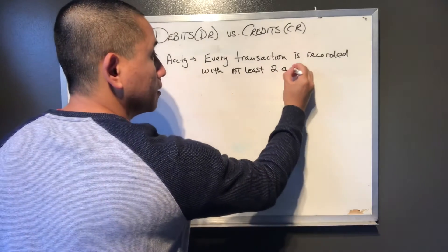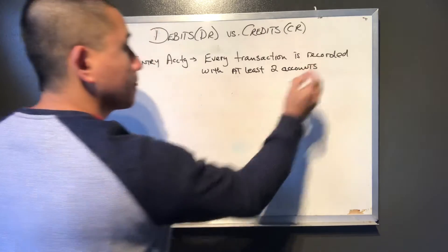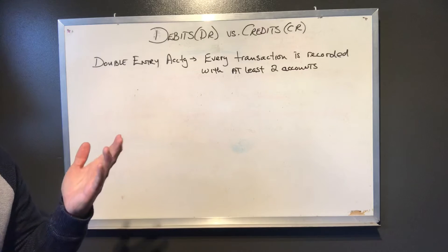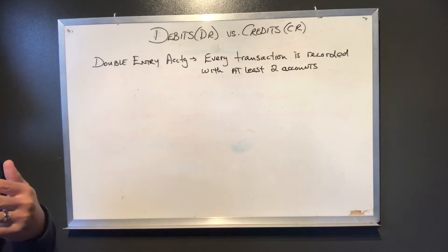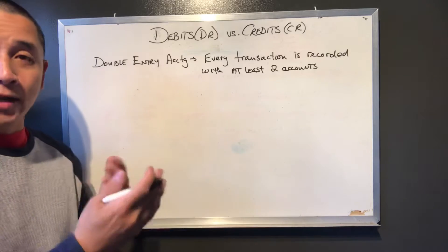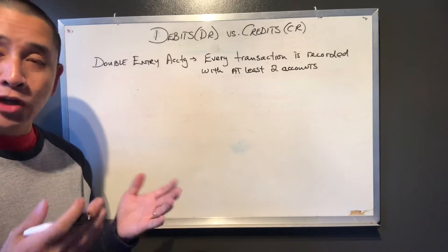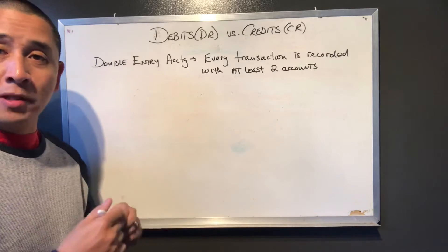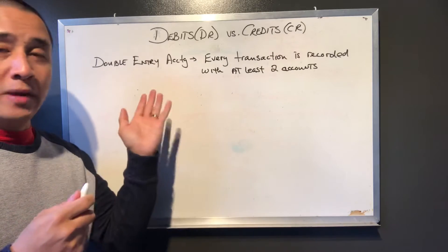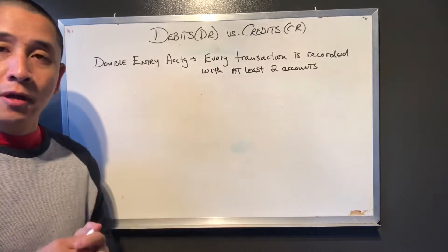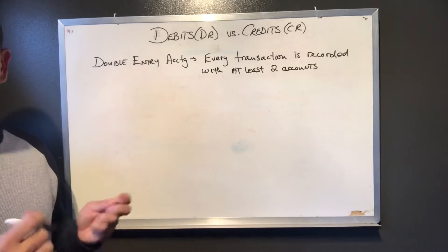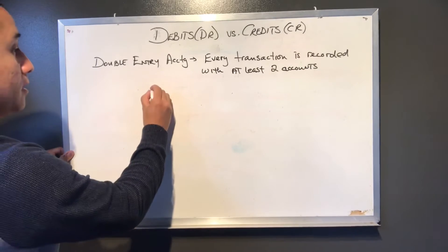The reason for this is that this method really helps to ensure and prevent errors from occurring, because everything has to balance out — all the debits have to equal all the credits. This goes back to the accounting equation where assets equals liabilities plus equity. In double entry accounting, we have journal entries where you'll be debiting one account and crediting another account.